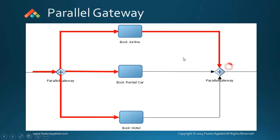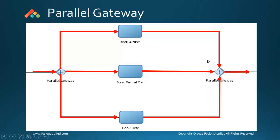At the merge part of the gateway, the token waits until all the tokens from all the sequence flows reach there. Once all the tokens reach the gateway, the token leaves the gateway.